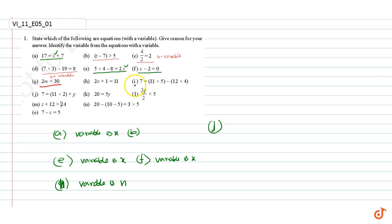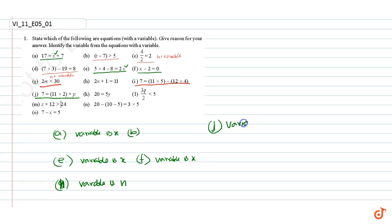Part i: this is a numerical equation, there is no variable. Part j: this is an equation with a variable p, the variable is p.